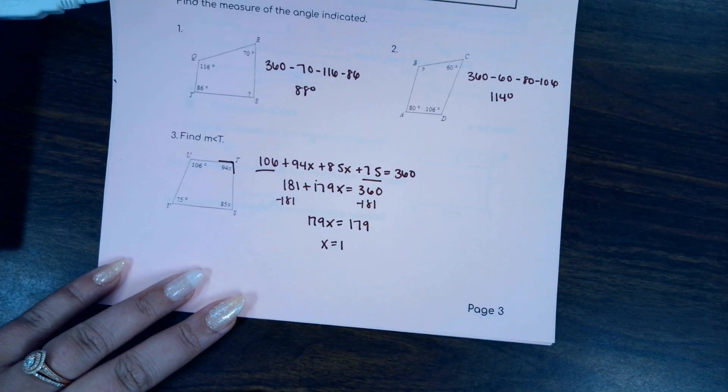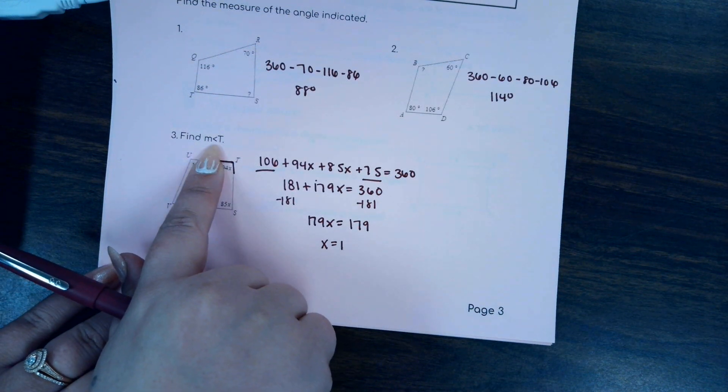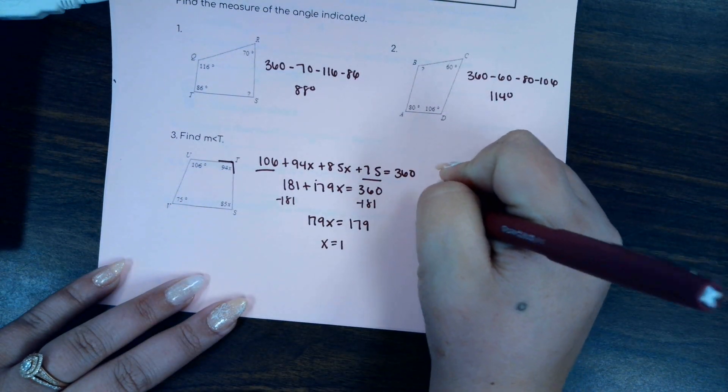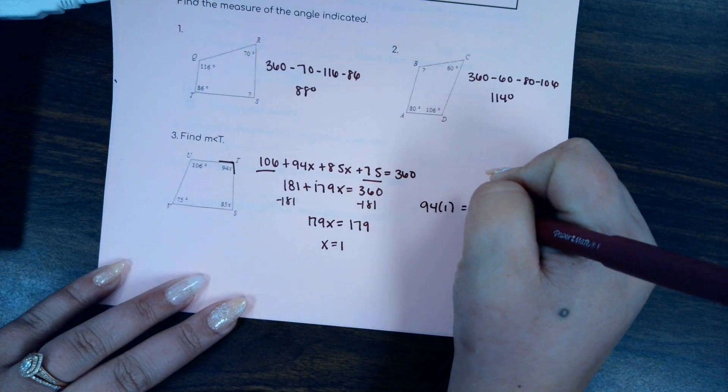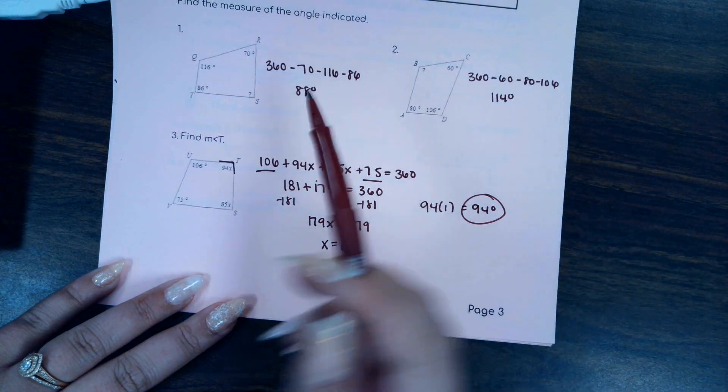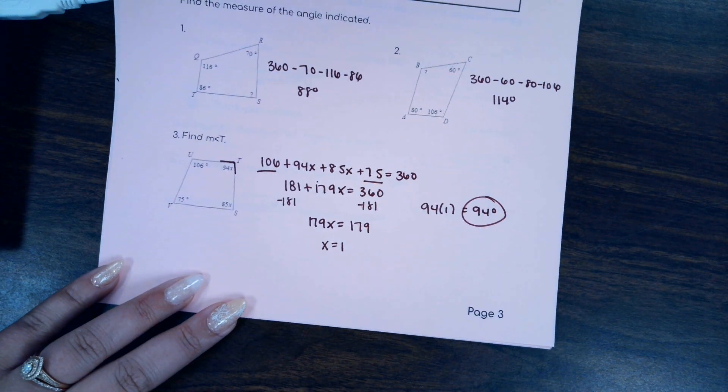Now, we know X equals 1, but that's not what we're asked for. We were asked for the measure of angle T. So to get the measure of angle T, plug 1 in there, you'll get 94 times 1, which is 94 degrees. So that means the measure of angle T is 94 degrees. All right, that's it for today.